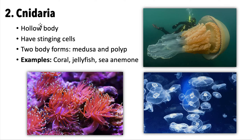The next phylum is Cnidaria, which we'll pair with Porifera in the same unit. These organisms have a hollow body, and nearly all of them have some sort of stinging cell. They generally come in two body forms: Medusa and Polyp. Medusas are jellyfish-shaped with stingers at the bottom, while Polyps are like sea anemones with stingers at the top.